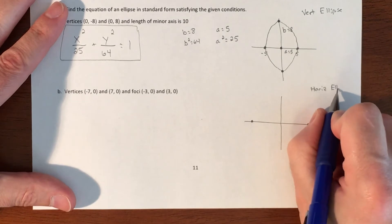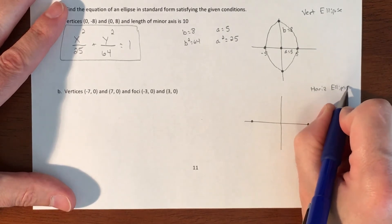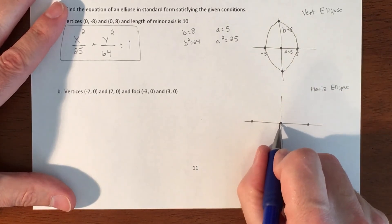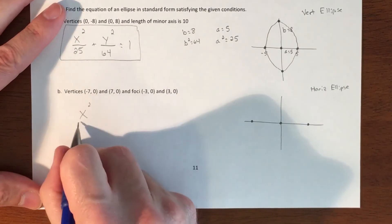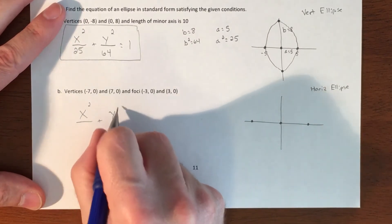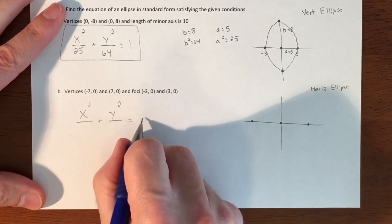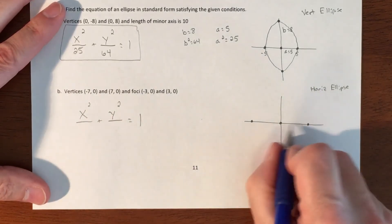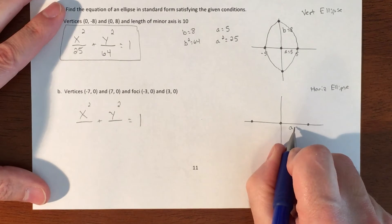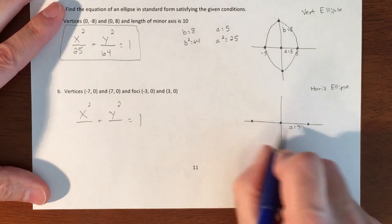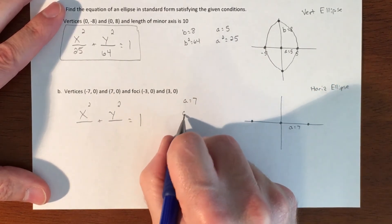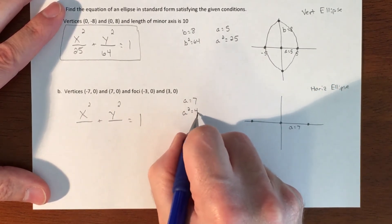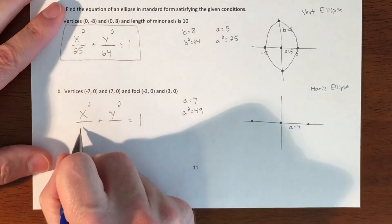It also told me that my center is at (0, 0) again. My a value is always my left and right shift, so that total distance is 7 in either direction. If a equals 7, a squared is 49.